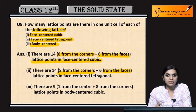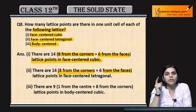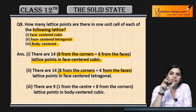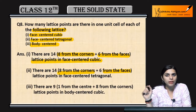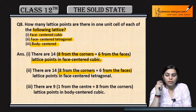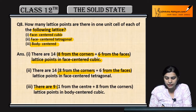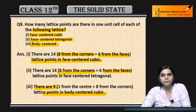Next is body centered. In body centered, there are 8 corners and 1 atom is present in the body center. So how many lattice points are in our unit cell? 8 on the corners plus 1 in the center of the body — so we have 9 lattice points in body centered. Take care!